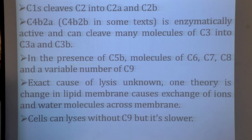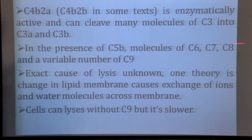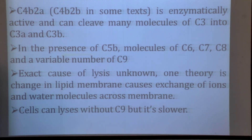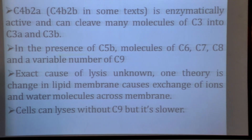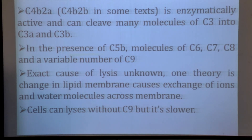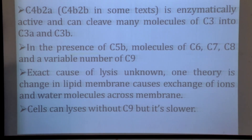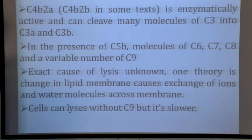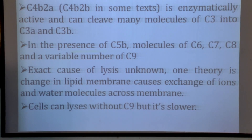In the presence of C5B, subsequent addition of complement molecules C6, C7, C8, and a variable number of C9 molecules forms the membrane attack complex. C9 proteins, known as perforins, make holes on the surface of bacteria or viruses, leading to cell death. The exact mechanism of lysis is not fully known; one theory is that changes in the lipid membrane cause exchange of ions and water molecules. Cells can lyse without C9, but it is slower.